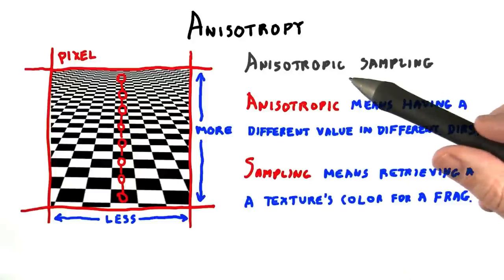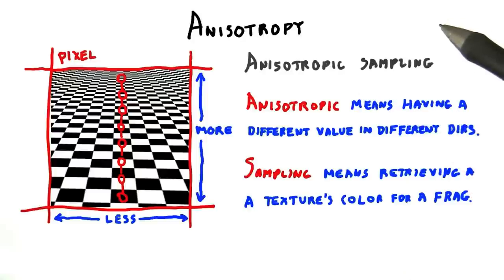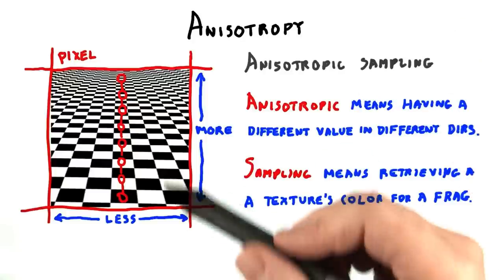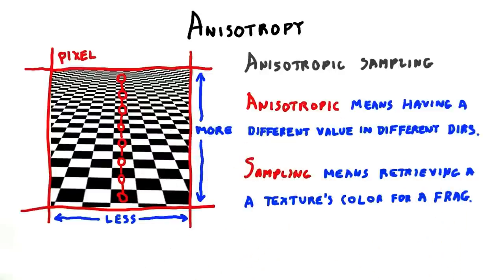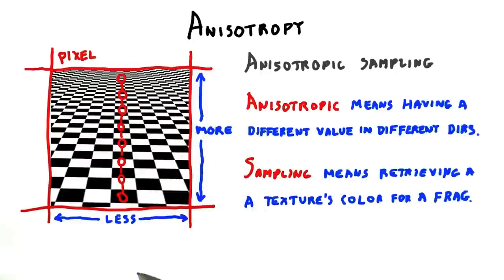Where the word anisotropic comes into play is when we get to these pixels on the horizon. Think about looking along one column of the checkerboard. At the horizon, a pixel may cover a large number of texels vertically, but few horizontally. That is, the number of texels differs in different directions.